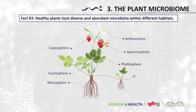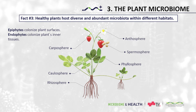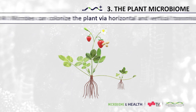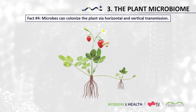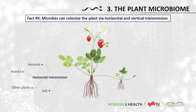Microbiota can colonize all of these tissues, both the outer and inner parts, and are respectively described as epiphytes and endophytes. Fact number four: microbes can colonize the plant via horizontal and vertical transmission. Horizontal transmission refers to microbes that colonize the plant from the environment. Especially soil represents an important source for microbes, with immense microbial diversity and abundance determined by soil type, available nutrients, and other environmental factors.